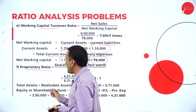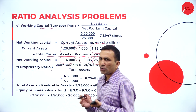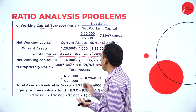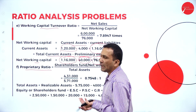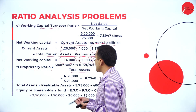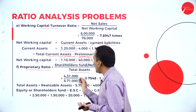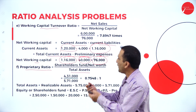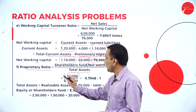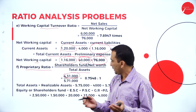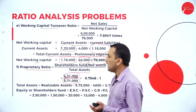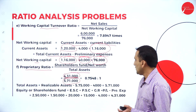Moving to the proprietary ratio. The proprietor is the owner. The formula is shareholders' fund — or net worth — divided by total assets. Shareholders' fund is 4,31,000, divided by total assets 5,71,000, giving 0.7548.